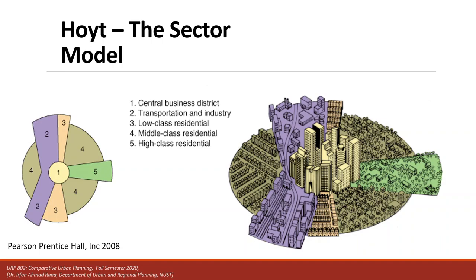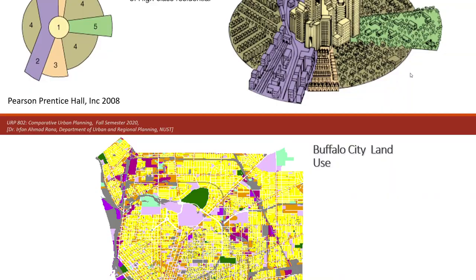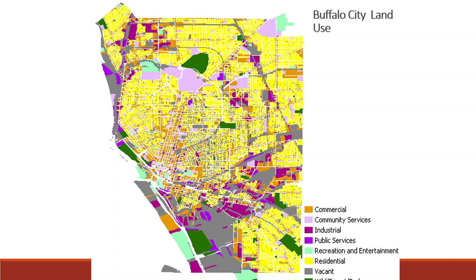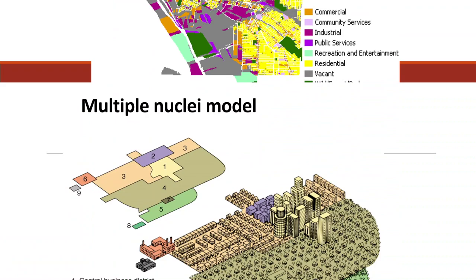This model could also be applied to Chicago, because in later time periods this model held true for Chicago. For example, looking at a Buffalo land use map, you can see different land uses in the form of wedges or corridors, in which different land uses are arranged along certain roads — you can observe some corridors and wedges clearly.